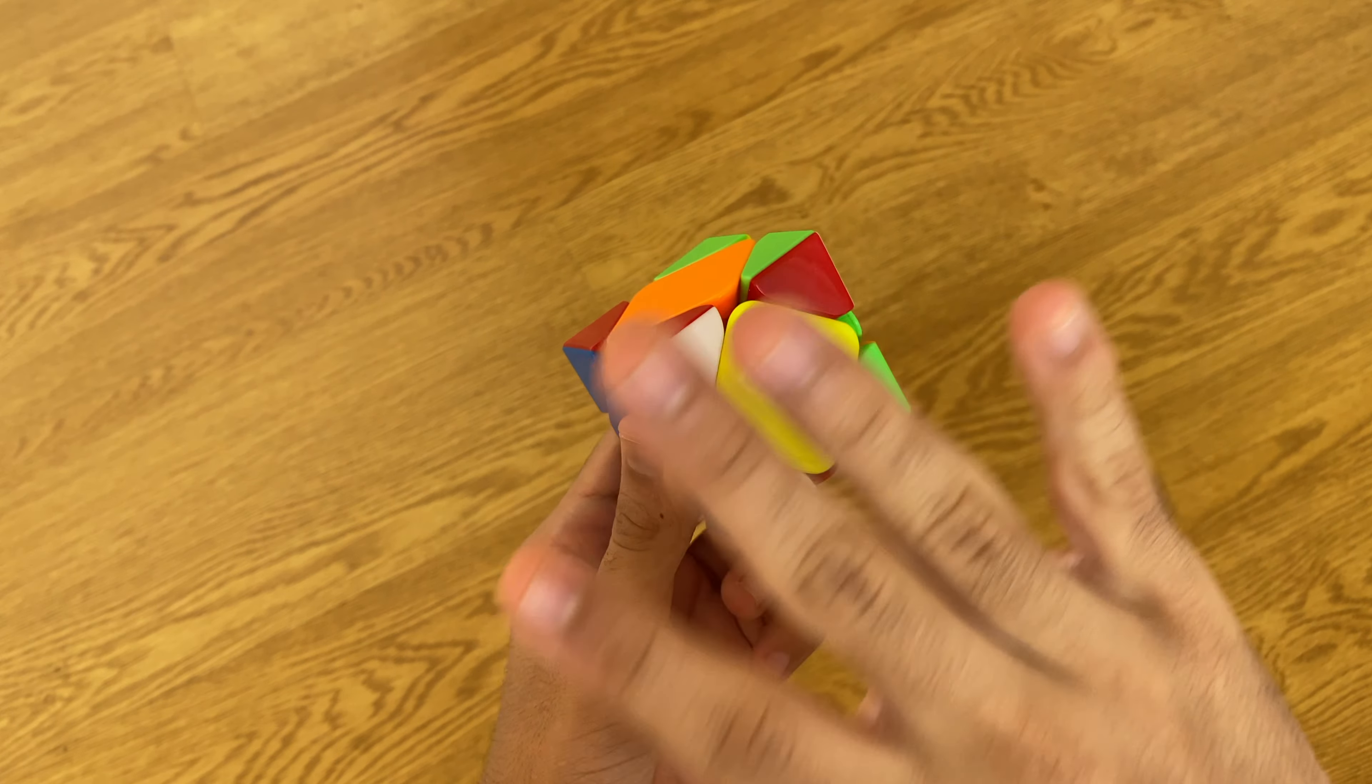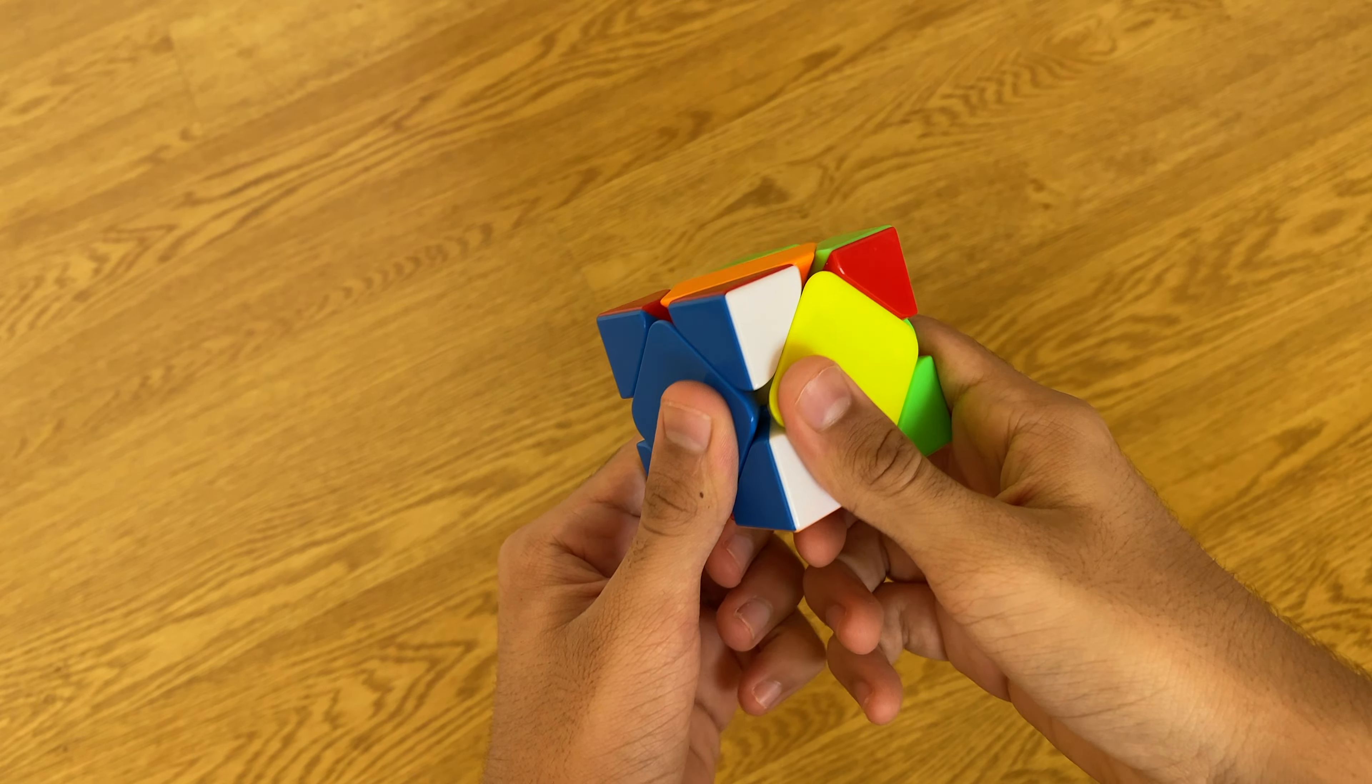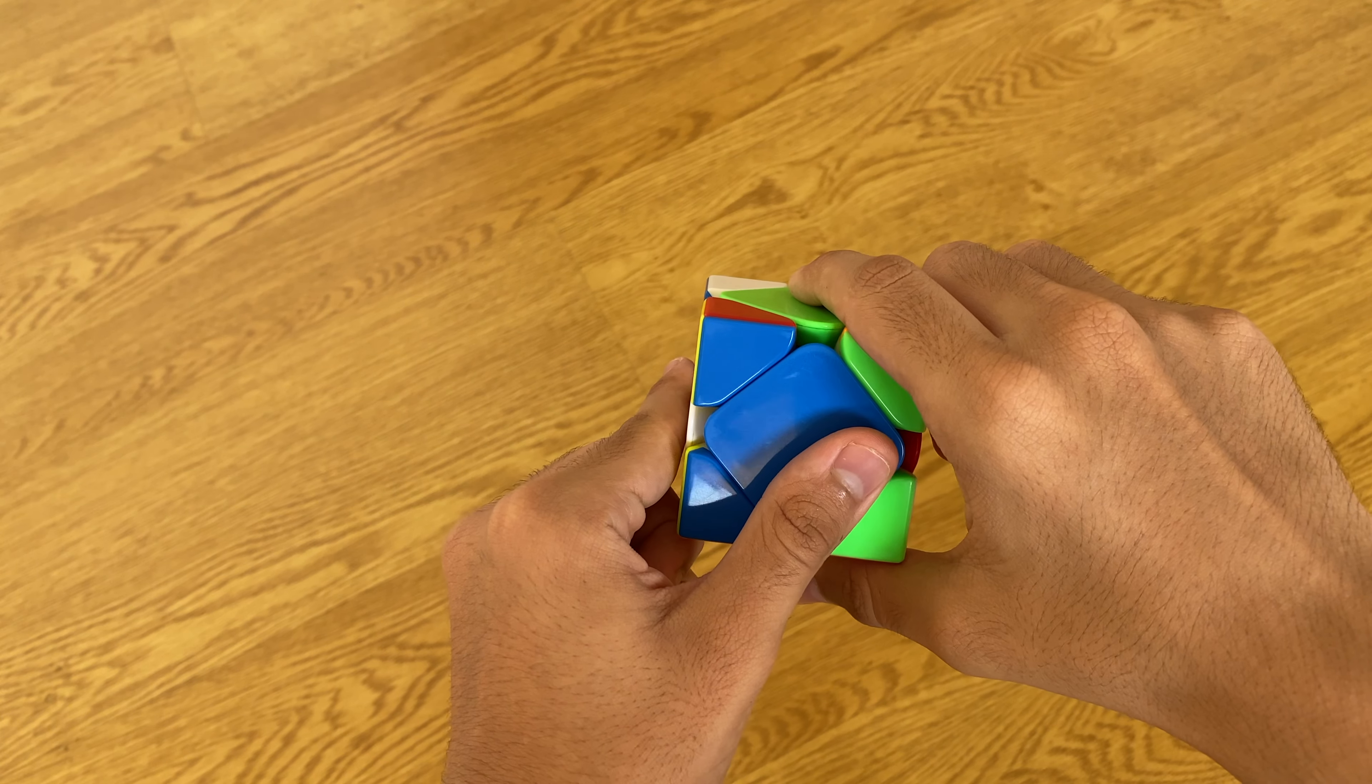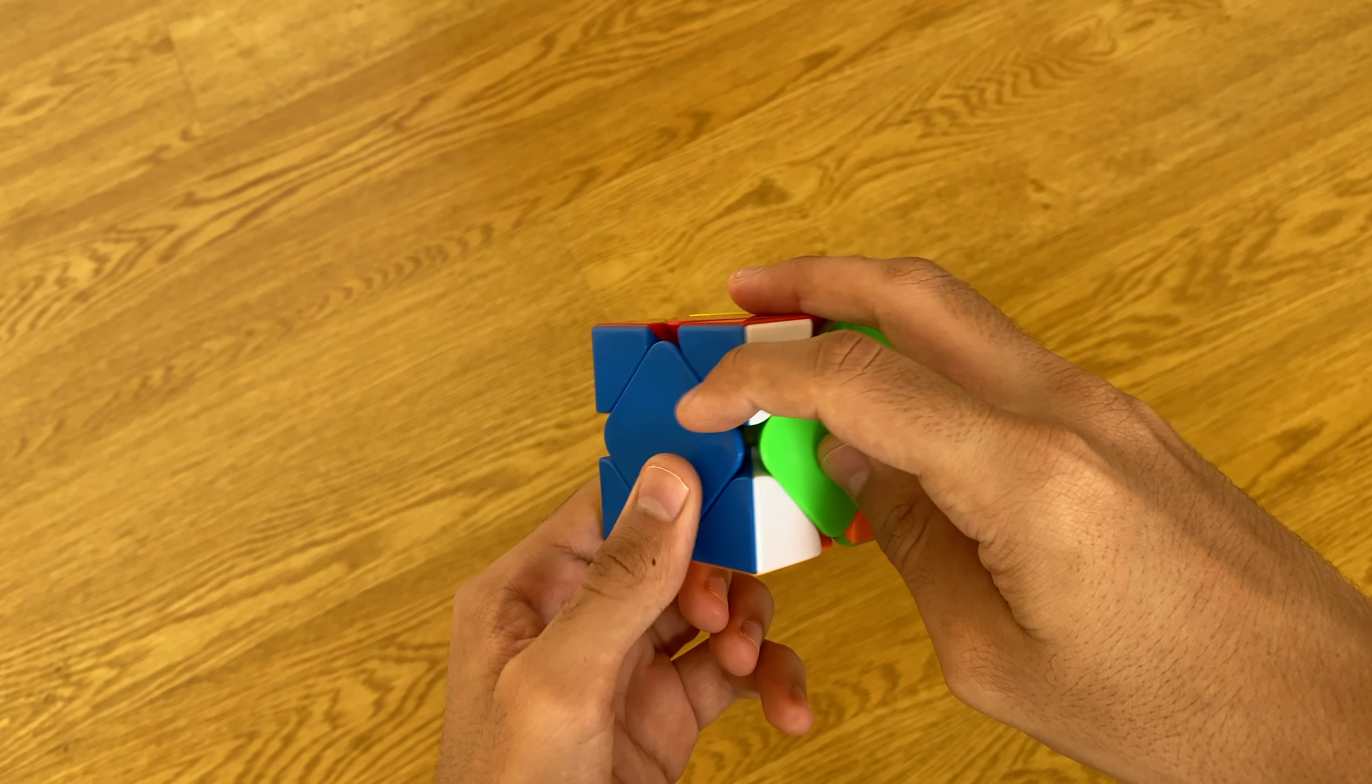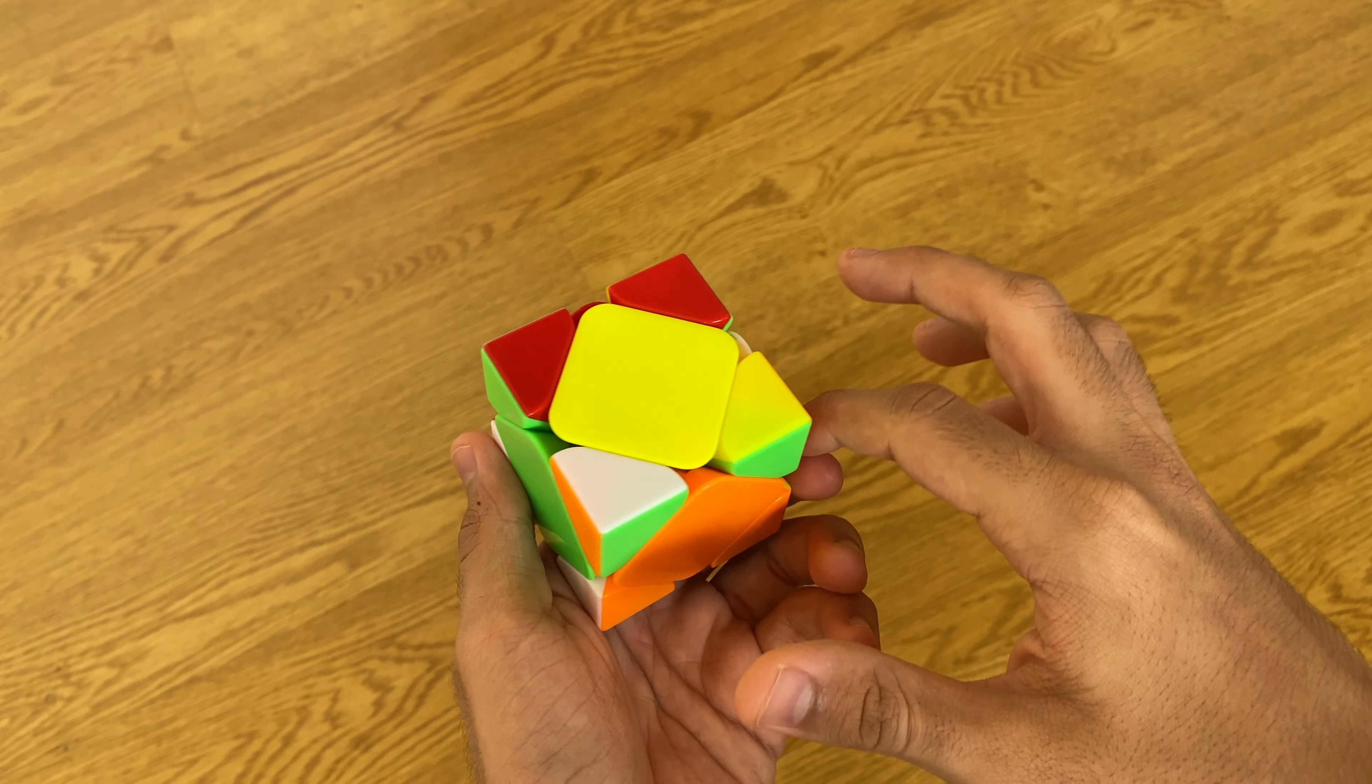After this, I would do the exact same sequence. I would bring this blue corner away, bring that blue corner away, bring this one, and then bring this back. That solves the blue side as well, and we are left with fewer pieces to solve.